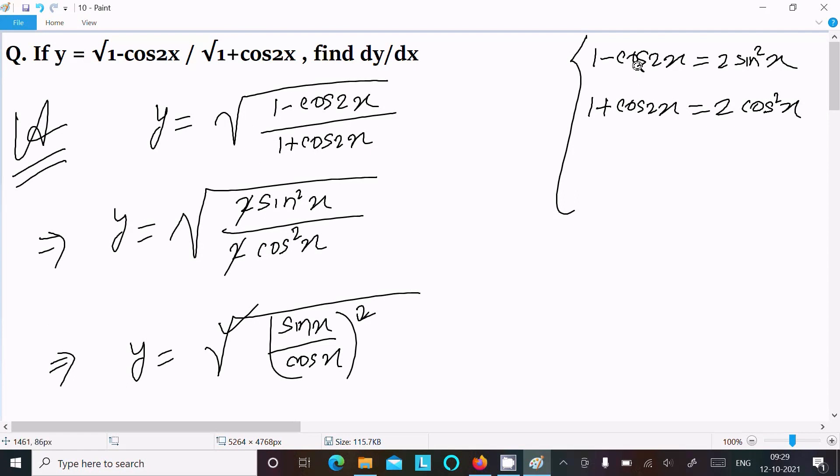1 minus cos 2x, that is equal to 2 sin squared x. 1 plus cos 2x equal to 2 cos squared x. This formula use.